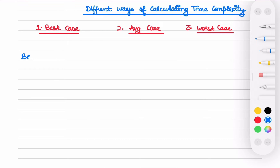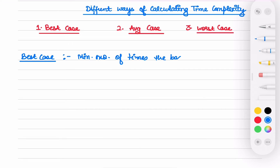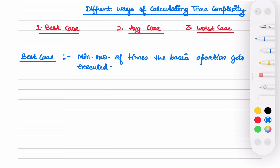Let's start with best case. Best case is nothing but the minimum number of times the basic operation gets executed. Best case time complexity means that by providing minimum efforts you get the results — you calculate the minimum number of times the basic operation has been executed to get the best case.